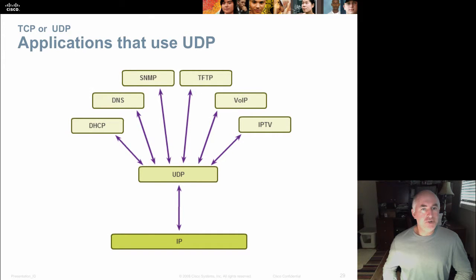Here are some that choose UDP. DHCP, where you automatically get your IP settings across the network. DNS, where your URL is converted to an IP address. Simple network management protocol, which is used by Microsoft servers to manage clients. Trivial file transfer protocol, which is to move unimportant files across your network. Voice over IP, which is being able to make phone calls over the internet. And IPTV, which is video conferencing.